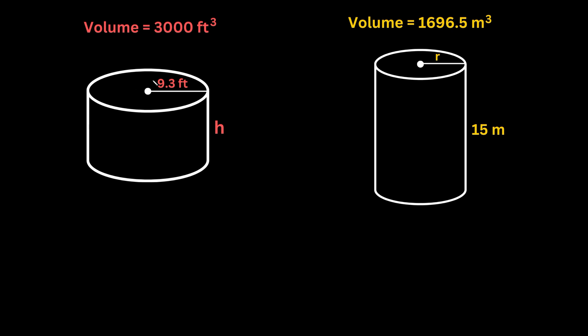So as you can see, it gives us a couple pieces of information. It gives us the volume, it's 3,000 feet cubed. It also gives us this distance of the radius, which is 9.3 feet, and we're just trying to solve for the height of this cylinder.